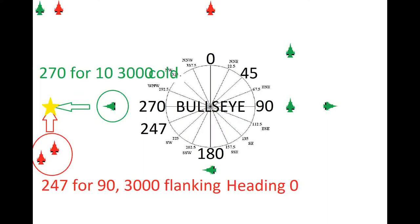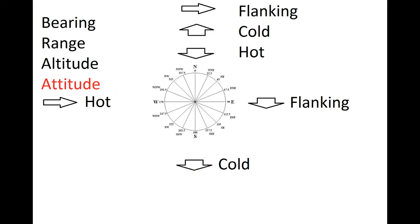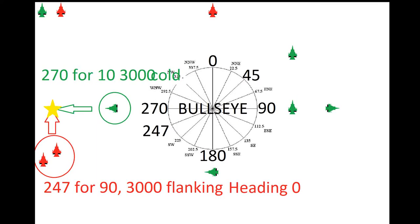A BRA call stands for Bearing, Range, Altitude, and Attitude. Sometimes you get extra information as well — whether they're flanking, hot, or cold, and their heading. That can give you an intercept course so you can figure out where to cut them off, and it can also help you decide whether to bug out or bounce — that's either attack or run away. You can base tactical decisions off these calls, and that's what they're there for.